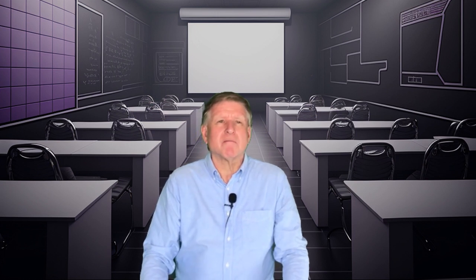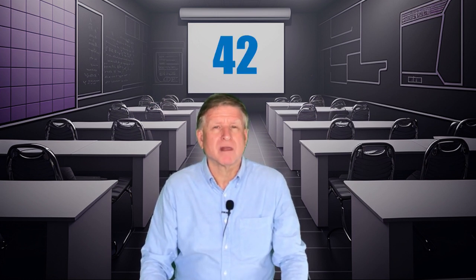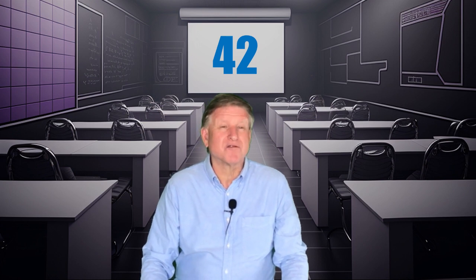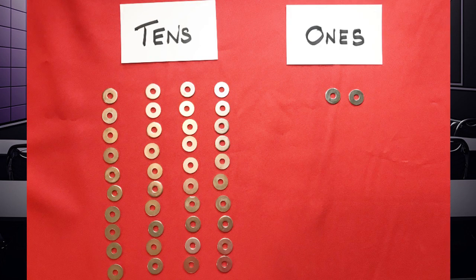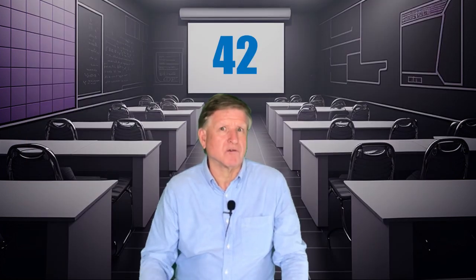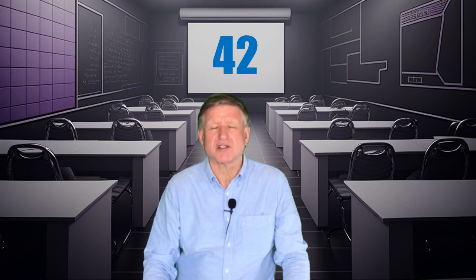So let's take the number 42 for example. That 4 actually represents four tens, or 40, and that's why the number is 42. The two of course is in the ones position, so that just represents two.